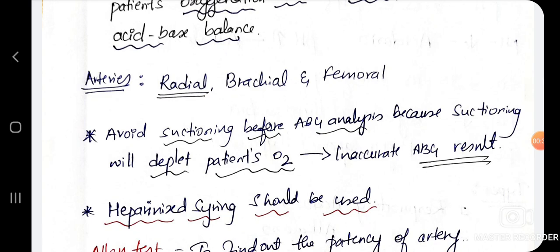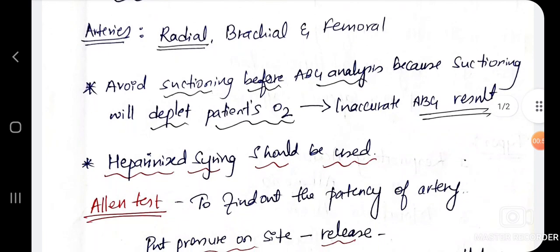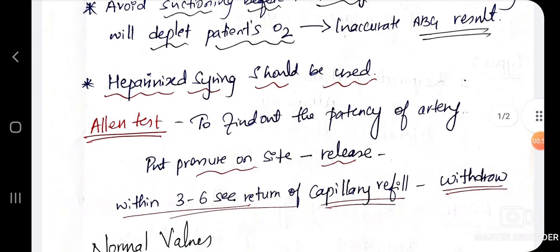Then what is our responsibility andre, avoid suctioning before ABG analysis because suctioning will deplete patient's oxygen level. So it leads to inaccurate ABG result baro dhe rindha, na avu suctioning na avoid maadbe kho. So na viyavtara syringe use maadbe kandre, we should use heparinized syringe should be used for taking ABG blood. Okay, inno on the important test yavudanthanra, Allen test. So to find out the patency of artery, we will use this.